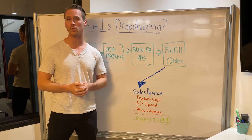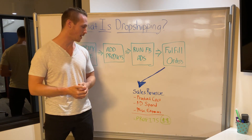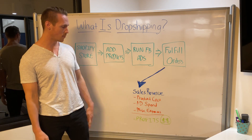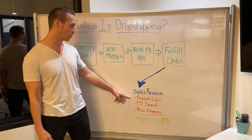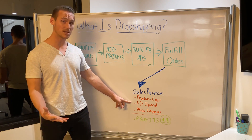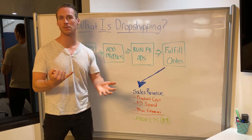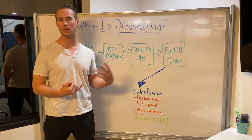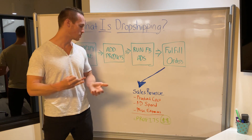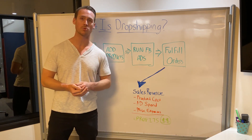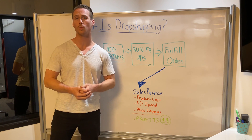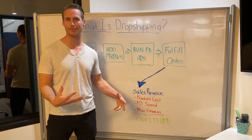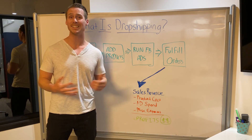The profit equation is straightforward: your sales revenue, minus the cost of goods, minus your ad spend, minus miscellaneous expenses like merchant processing fees. You'll also pay Shopify a small subscription fee, but ultimately you make the difference between your revenue and those three expense categories.